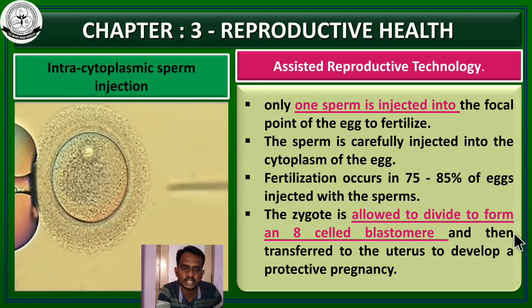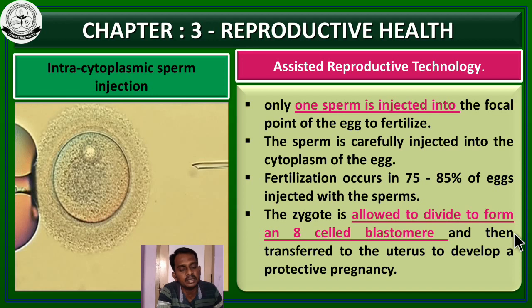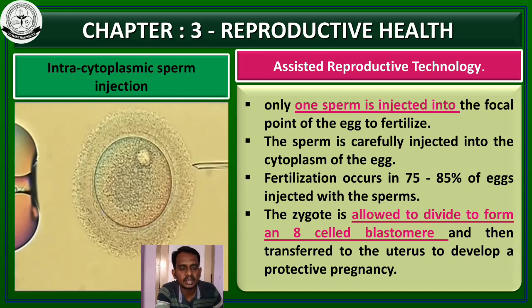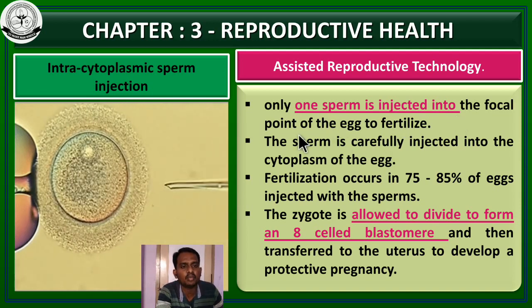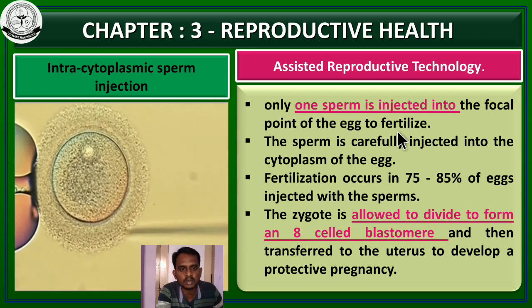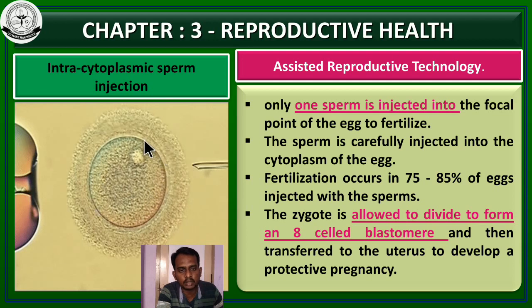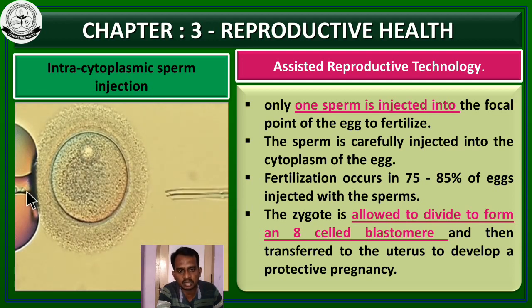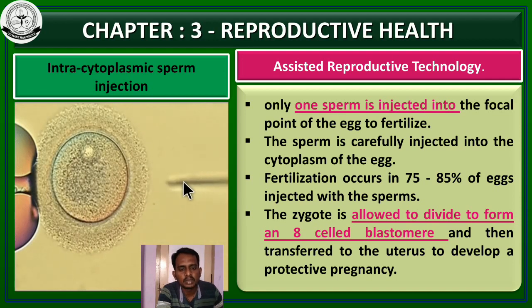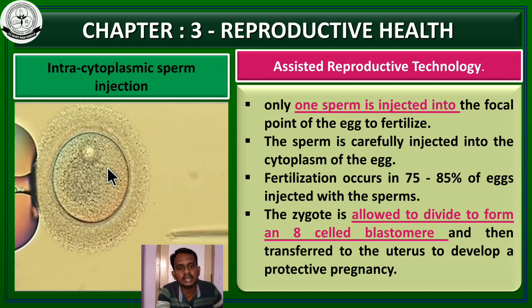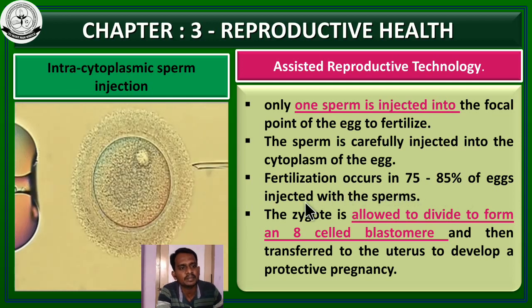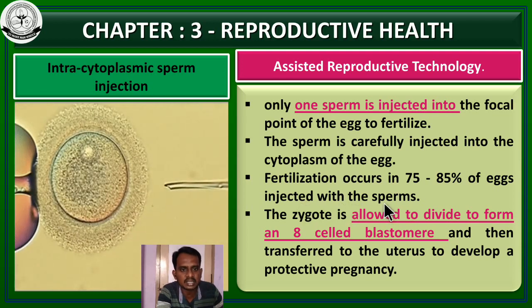Next, we move on to intracytoplasmic sperm injection (ICSI). This is another advanced technique beyond in vitro fertilization. Here, only one sperm is injected into the focal point of the egg to fertilize. The wastage of sperm is avoided and the chances for fertilization are higher than with other artificial techniques. The sperm is carefully injected into the cytoplasm of the egg using a micro-injection technique. A sucker holds the egg and a micro-needle injects a single sperm into the ooplasm. The fertilization rate occurs in 75 to 85 percent of eggs injected with sperm.